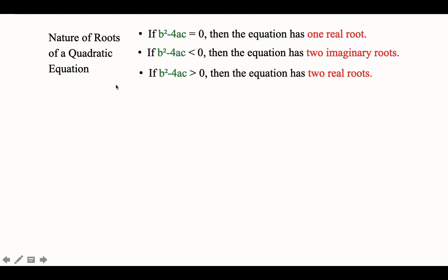How are we going to determine the nature of the roots of a quadratic equation without solving them? The discriminant will help us identify this even without solving. If the discriminant is equal to 0, it tells us the equation has only one real root. If the discriminant is less than 0, a negative number, the quadratic equation will give us two imaginary roots. If the discriminant is more than 0, a positive number, this will give us two real roots.